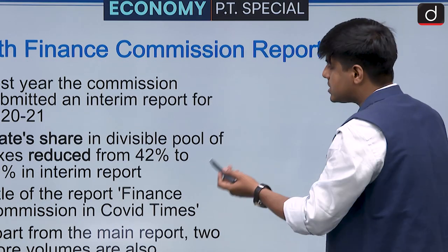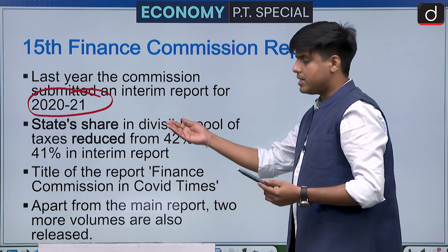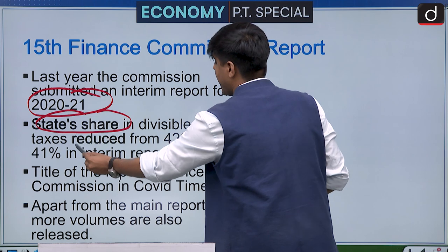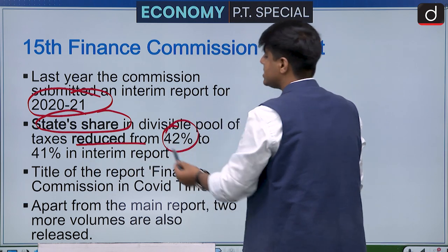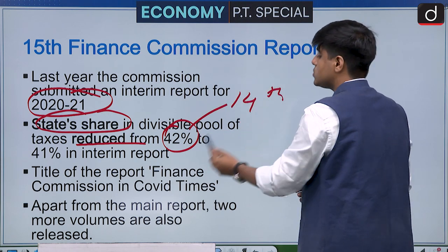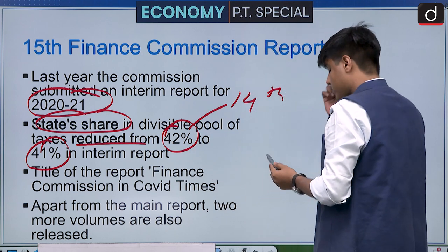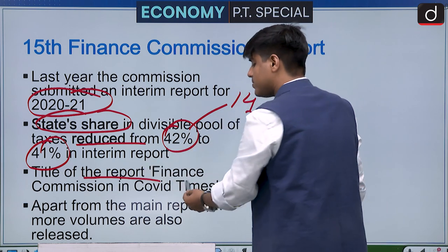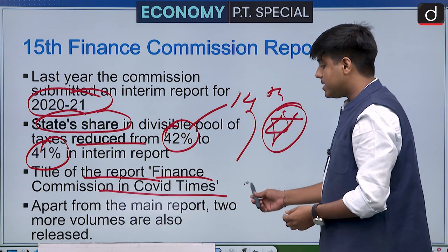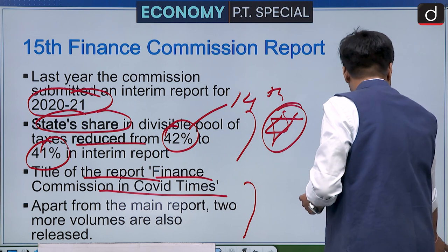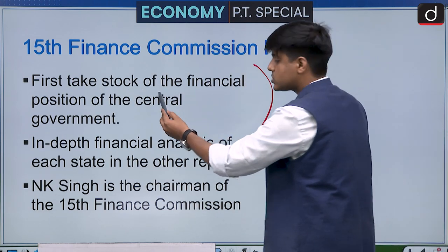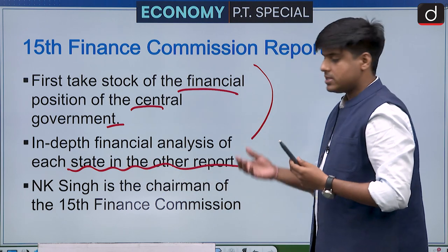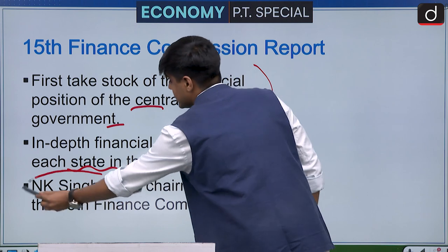The 15th Finance Commission was constituted for 2021 to 2024-25, but due to COVID-19 an interim report was released for 2021 first. Under these recommendations, the state share in the central pool of taxes has been reduced from 42 percent — the 14th Finance Commission recommendation — to 41 percent. The title of the report was 'Finance Commission in Covid Times.' Two additional volumes were released: one on the financial position of the central government, and one with in-depth financial analysis of each state. N.K. Singh, the retired bureaucrat, is the chairman of the 15th Finance Commission.